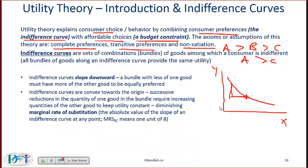Indifference curves are convex towards the origin — if you sit at the origin and look, the curves will be convex. Successive reductions in the quantity of one good in the bundle require increasing quantities of the other good to keep utility constant.